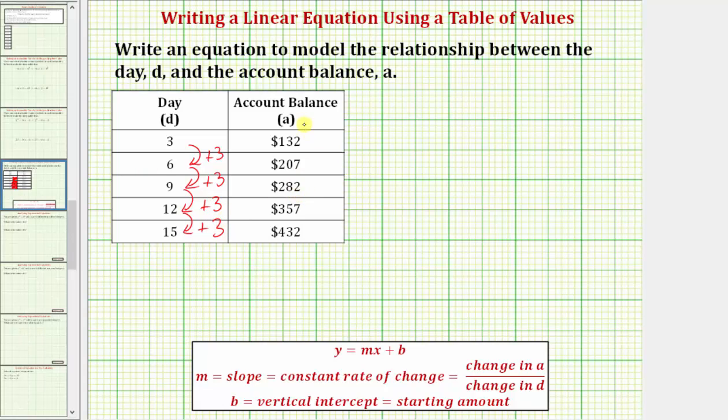Let's see if there's also a constant change in the account balance. To determine the change in the account balance from 132 to 207, we'd have to subtract 207 minus 132.